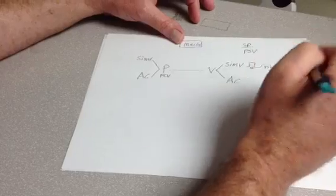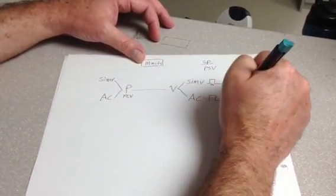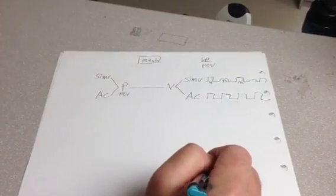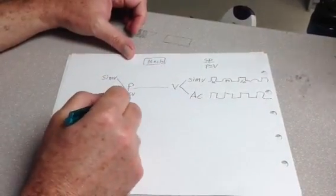Now, in assist control, when they breathe over the rate, every single breath is a mechanical breath. So all of those are mechanical volumes that are given to the patient. And same thing over here for pressure control.